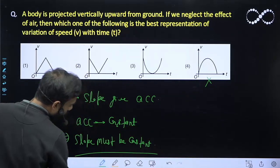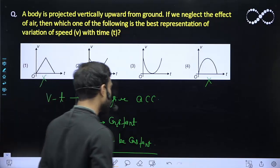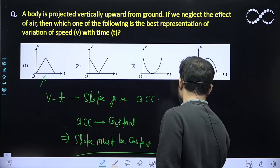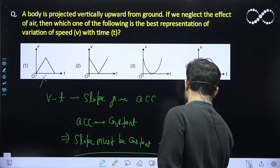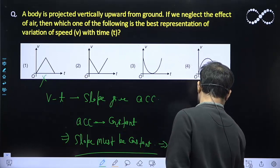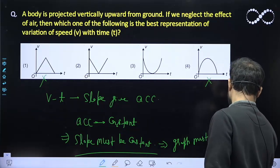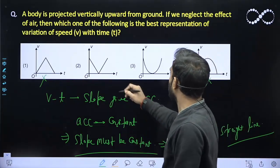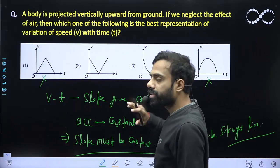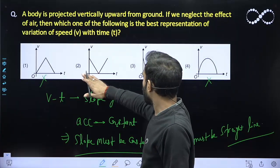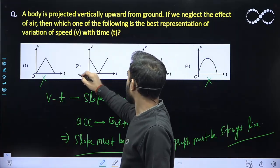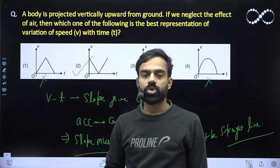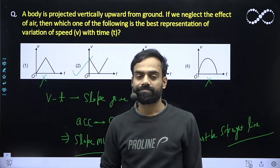So if the slope is constant, the graph must be a straight line. So 1 and 4 was already rejected and the straight line graph only is coming for the case of 2. So option 2 will be correct. Students, I hope you understood this question.